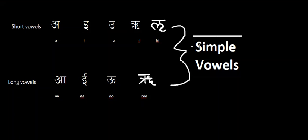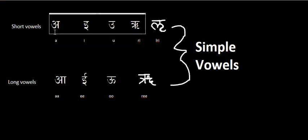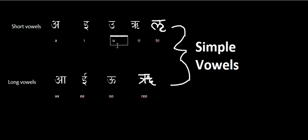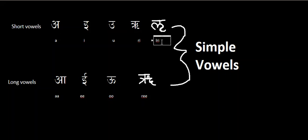Let's take a look at the short vowels and the long vowels. The short vowels are: a, i, u, ri, and lri — with an l over here.